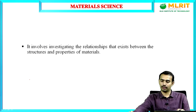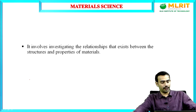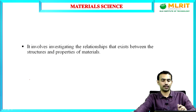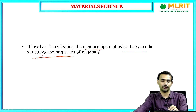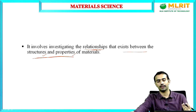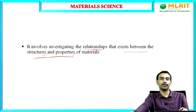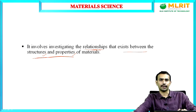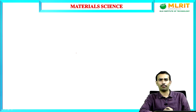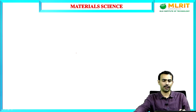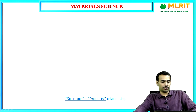Now we will look at the terminology. Material science is one subject which involves investigating the relationships existing between the structures and the properties of the material. We will look at what structure is and whether structure has any relationship with property — let us take an example to understand the structure-property relationship.